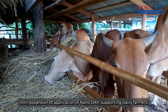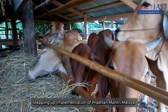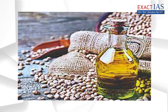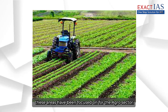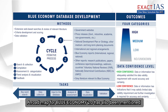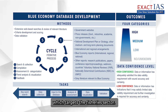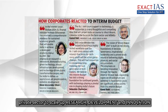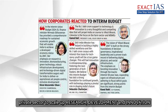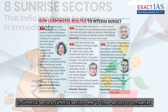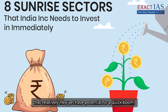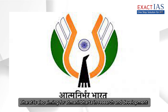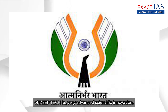Tenth, expansion of application of nano-DAP, supporting dairy farmers, stepping up implementation of Pradhan Mantri Matsya Sampada Yojana, and ensuring Atma Nirbharata for oilseeds — these areas have been focused on for the agro sector. A roadmap for Blue Economy 2.0 has also been mentioned, targeting the fisheries sector. Eleventh, a corpus of Rs 1 lakh crore is to be provided to encourage the private sector to scale up research, development, and innovation in sunrise sectors — referring to relatively new sectors with potential for quick growth. Bharat is also aiming for Atma Nirbharata in research and development of deep tech, i.e., very advanced scientific innovation.